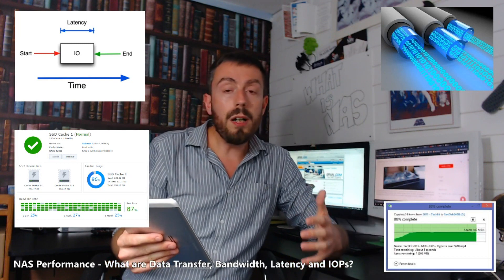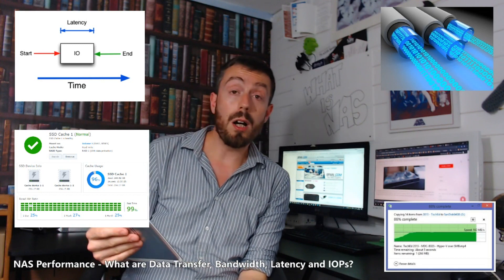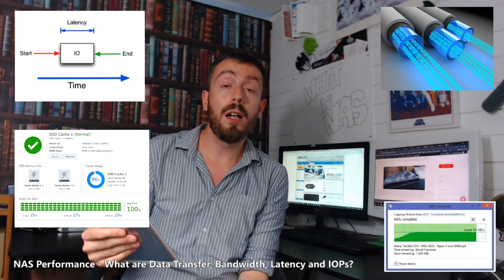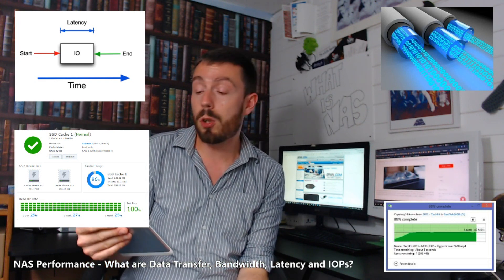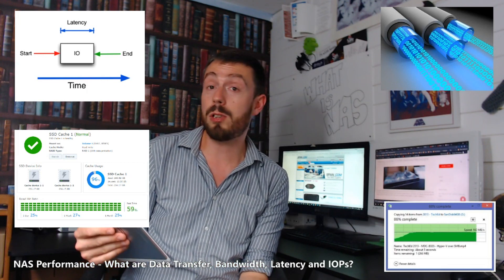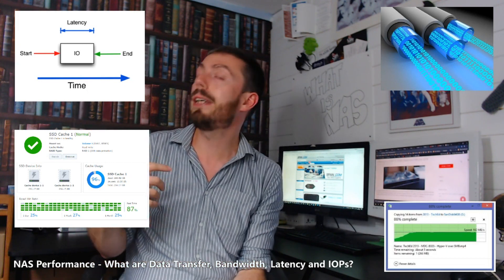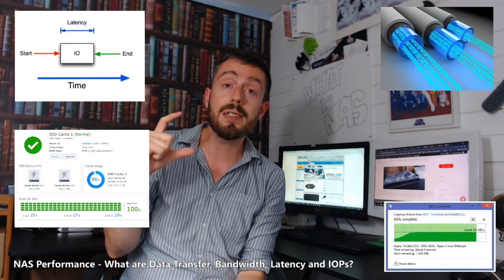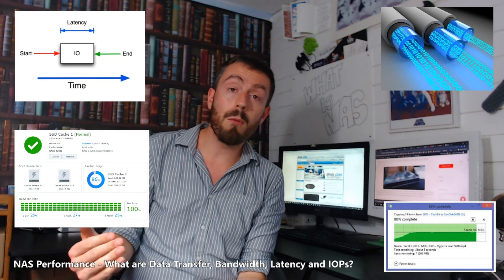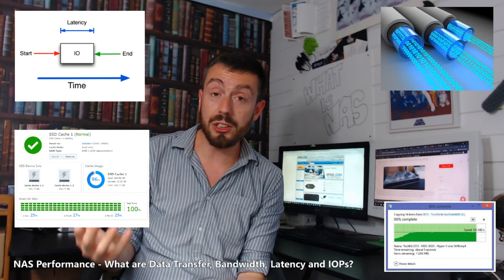Older 5400 RPM hard drives have an IOPS of around 40, going up to 80 IOPS on a 7200 RPM drive. Enterprise-level SAS drives at 10,000 RPM — the old Barracuda and Velociraptor type drives — reached 120 IOPS, which gave way to 180 IOPS with the smaller form factor SAS 15,000 RPM drives. After that, when things moved from hard drives to SSDs, things changed significantly.